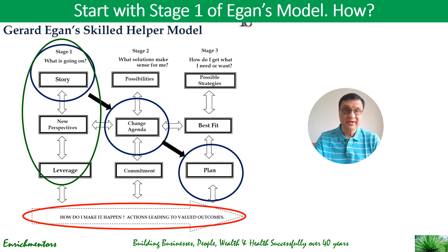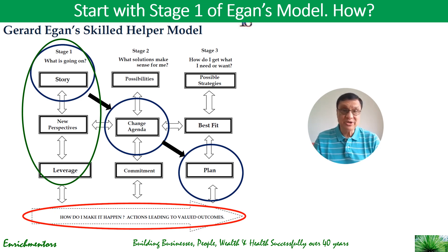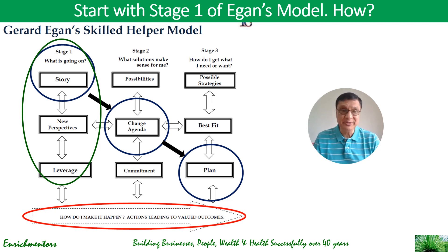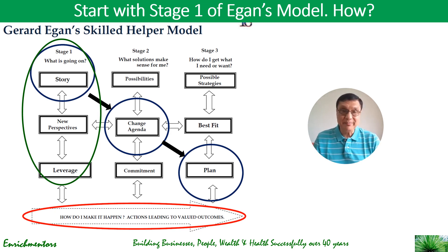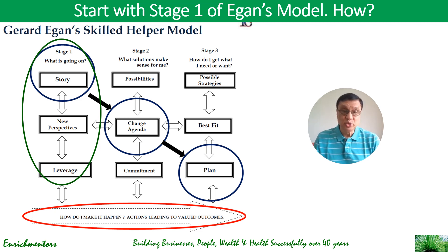So what do we do next? We start with Stage 1 of Egan's model, where you can see three steps as you go down. First, you need to develop the story — understand your life story. More importantly, as you develop the story, understand it to develop new perspectives, something that you have not seen before. Because if you had seen those things earlier, you would have changed yourself. The block to your development is that you have stopped seeing new things about yourself that can help you develop. Then you see which of the new perspectives you should leverage to start making it happen.